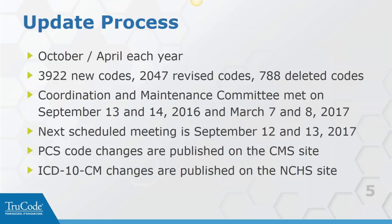So who makes the code changes? That is done by the Coordination and Maintenance Committee. They last met on September 13th and 14th of 2016, and the decisions they made following that meeting - because they don't make any decisions during the meeting - are where the codes we're changing this October have come from. They also met on March 7th and 8th of 2017, but there were no codes changed during that March call that are being implemented for October. They're actually meeting today and tomorrow.